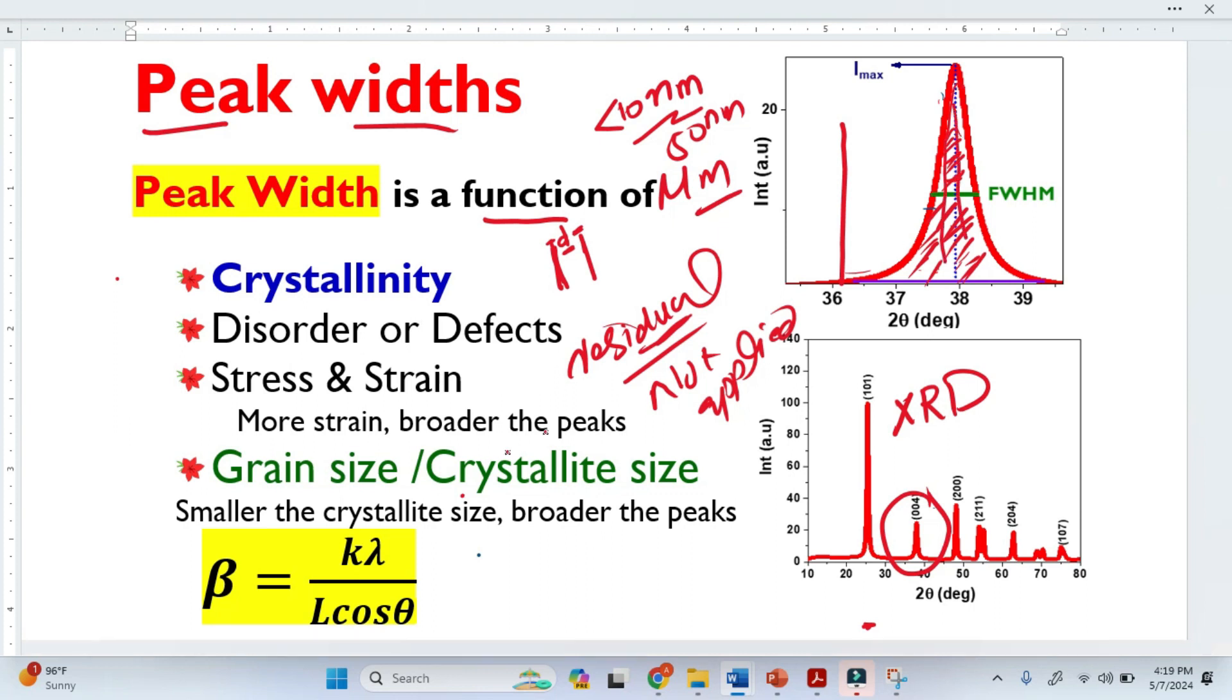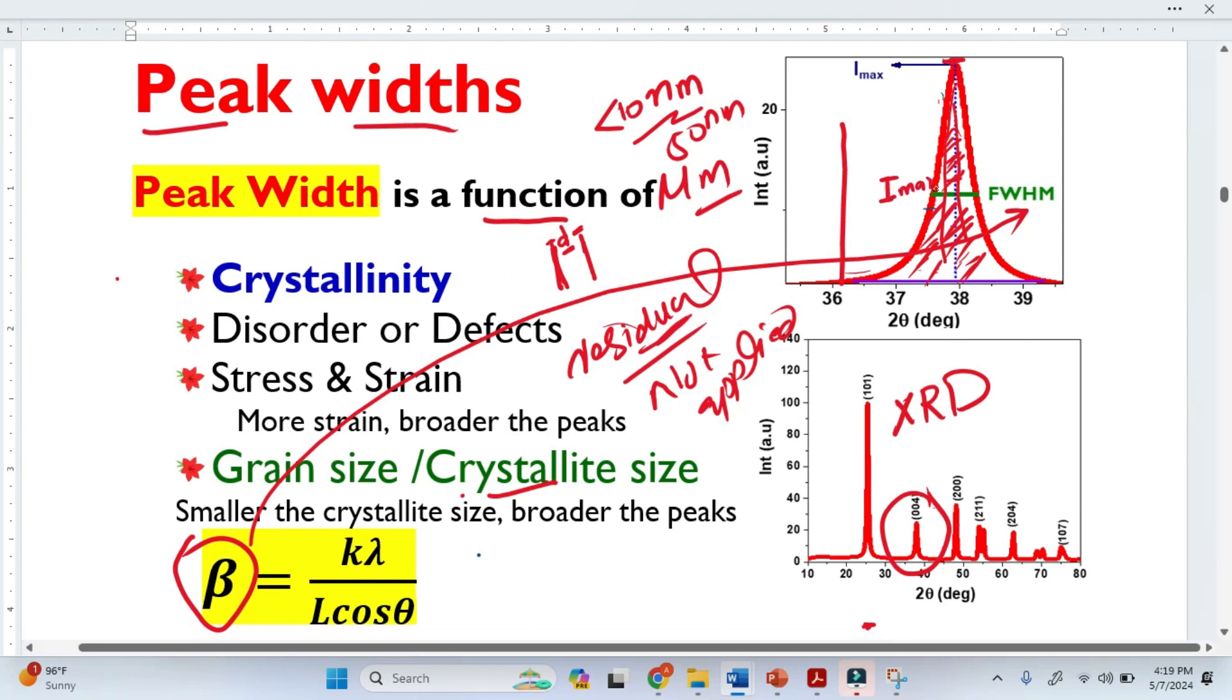So this is the relation. From this peak width, we can easily calculate the crystallite size. This is the formula. And this β is basically the full width at half maxima (FWHM). We know this is basically the maximum intensity here. Just magnify this peak, any peak, and half of that maximum intensity is basically your full width at half maxima.